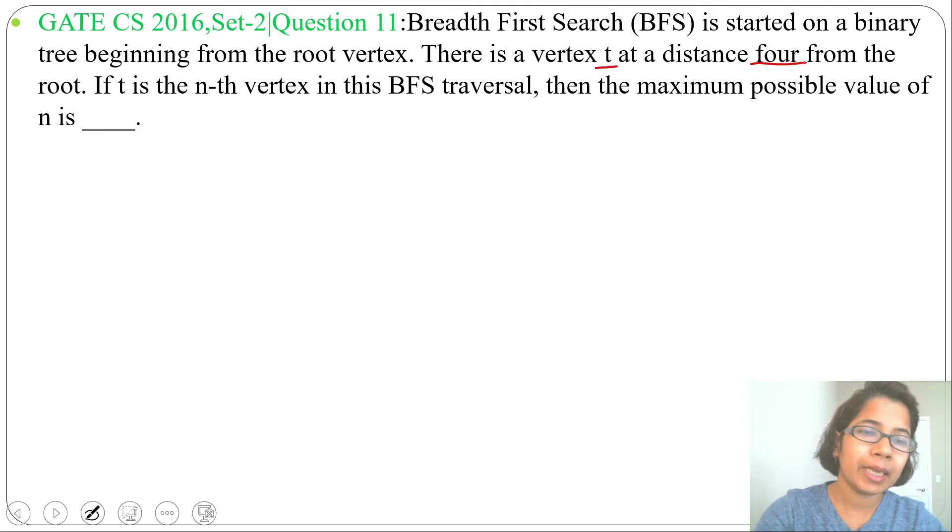If t is the nth vertex in the BFS traversal, then the maximum possible value of n is blank. Let me first construct a binary tree and explain the question on that binary tree.